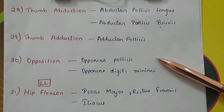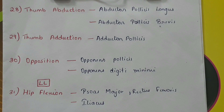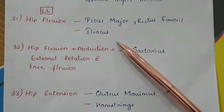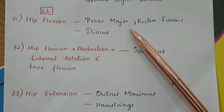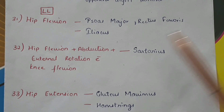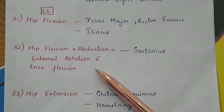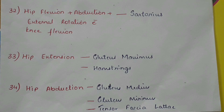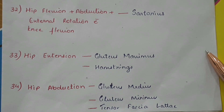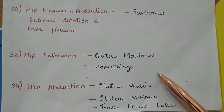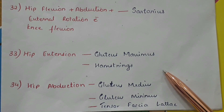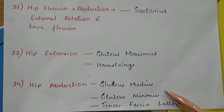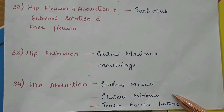Opposition by the opponens pollicis and the opponens digiti minimi. In the lower limb, hip flexion is done by the iliopsoas — the iliacus and the psoas major muscle — and the rectus femoris. Hip flexion, abduction, and external rotation with the knee in flexed position is done by the sartorius muscle. Hip extension by the gluteus maximus and the hamstring muscles, which include the semitendinosus, semimembranosus, and biceps femoris. Hip abduction by the gluteus medius, gluteus minimus, and tensor fasciae latae.